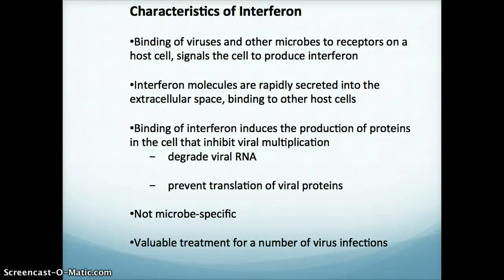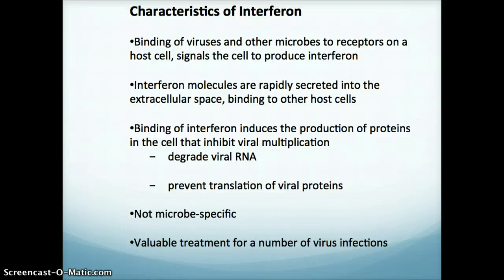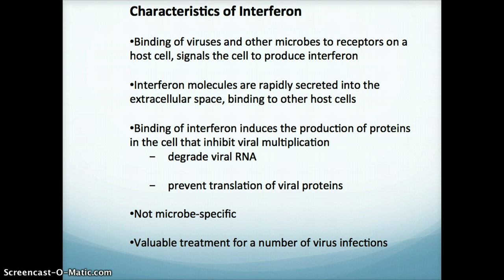So how does this work? Viruses and other microbes can bind to receptors on host cells and signal the cell to produce interferon. This interferon is then rapidly secreted into extracellular space and binds to neighboring host cells, inducing those cells to produce proteins that inhibit viral multiplication — almost like vaccinating neighboring cells so they cannot produce viruses if infected or can block infection. It can degrade viral RNA and prevent translation of viral proteins. Importantly, it is not microbe-specific, making it a non-specific defense valuable for treating a number of virus infections.